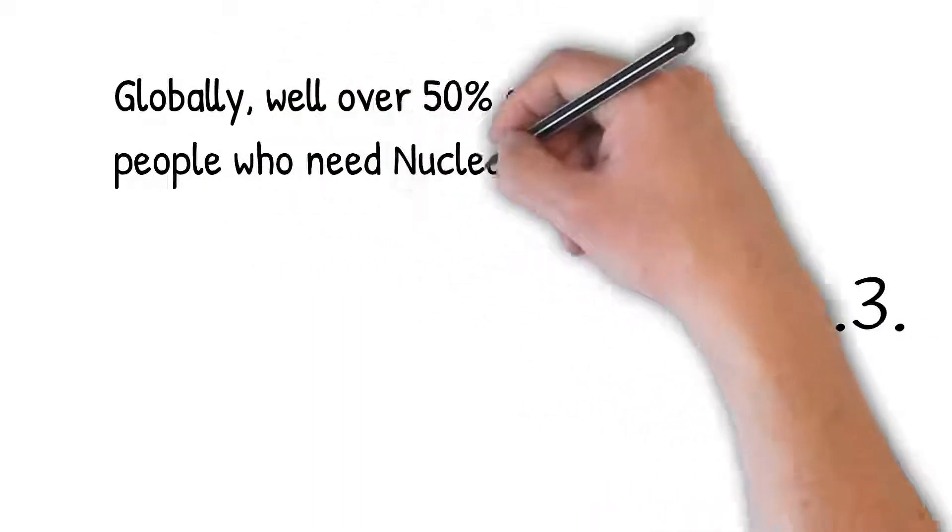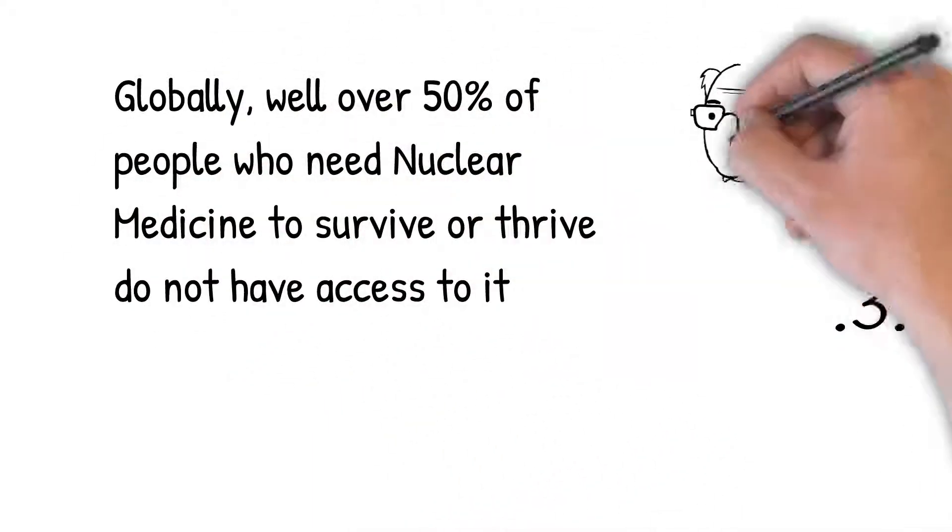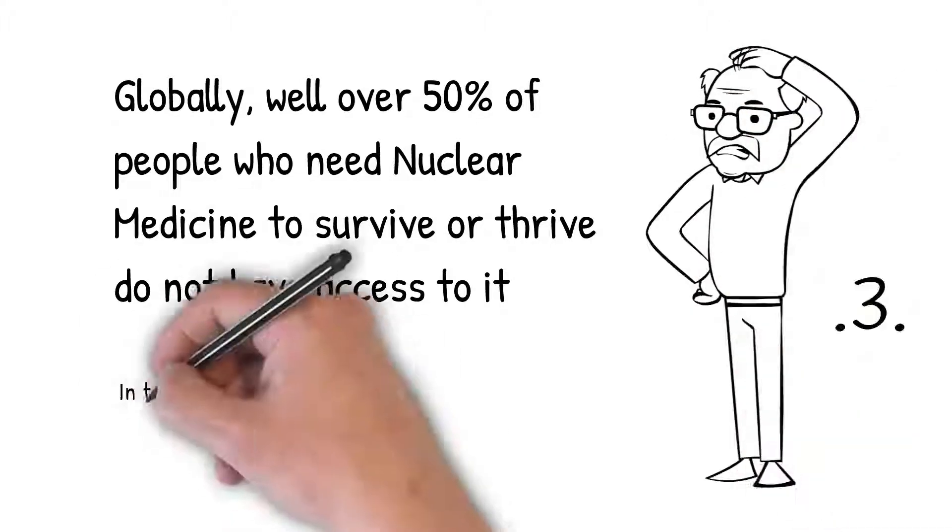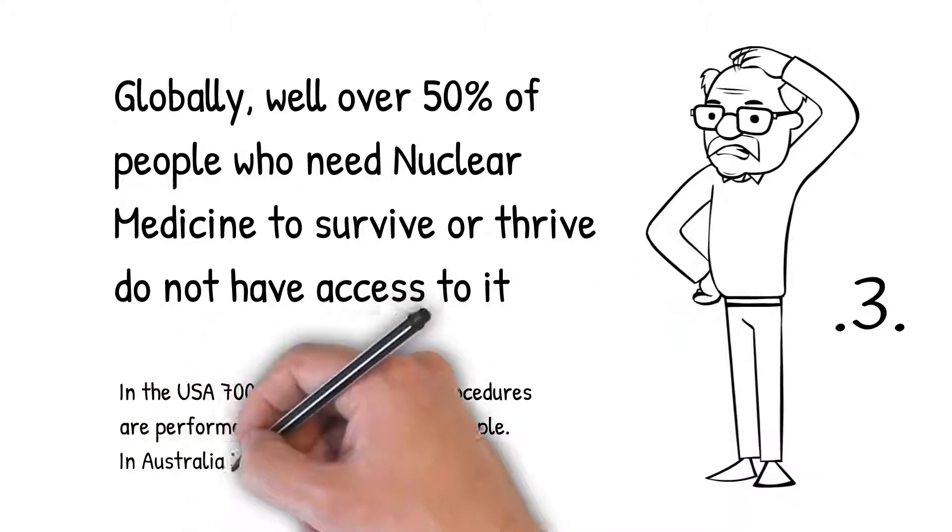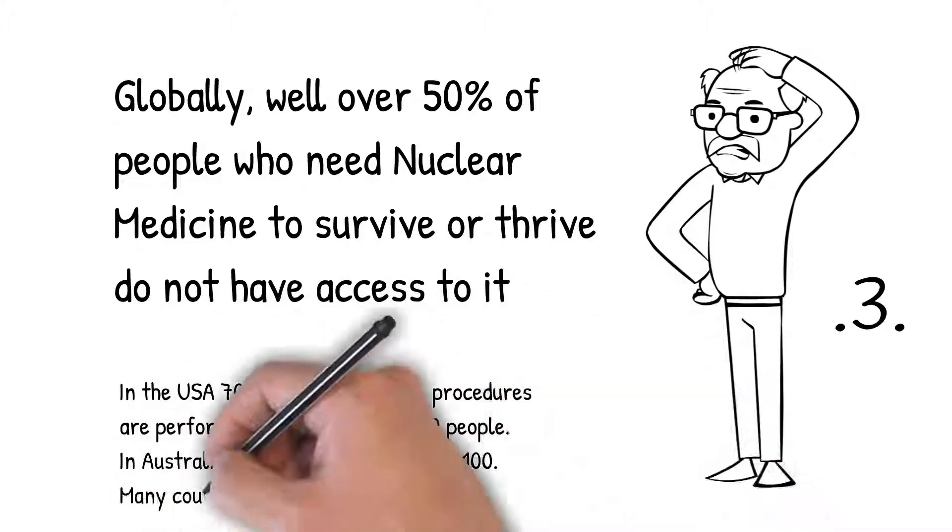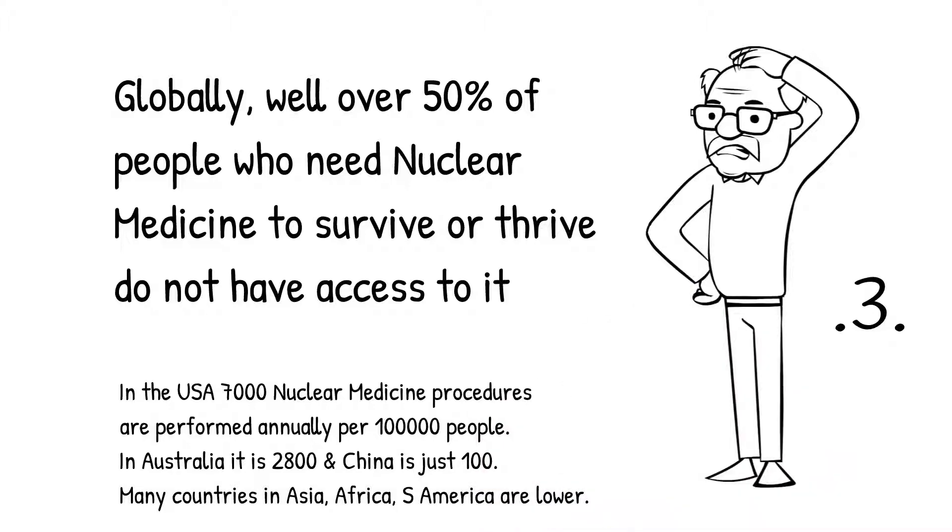Globally, the situation is worse with well over 50% of people who need nuclear medicine not having access to it. In the US, 7,000 nuclear medicine procedures are performed annually per 100,000 of population. In Australia it's 2,800, but in China it's down to 100, and in many countries in Asia, Africa, and South America it's even lower.